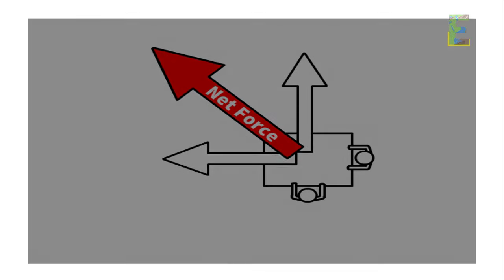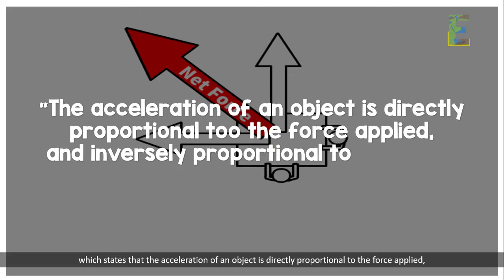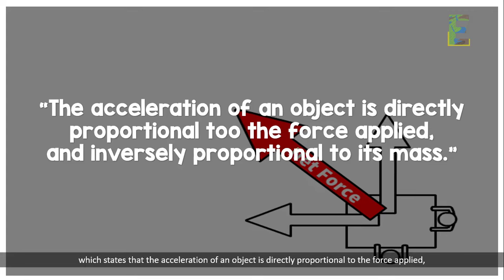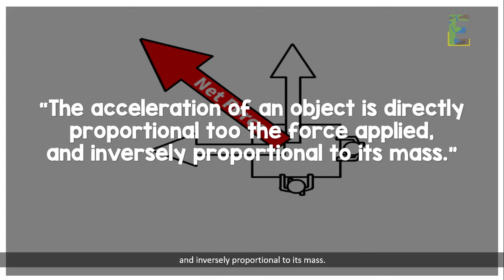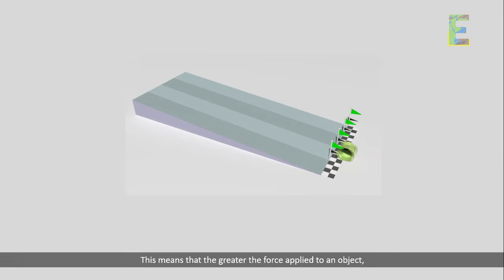This is described by Newton's second law of motion, which states that the acceleration of an object is directly proportional to the force applied and inversely proportional to its mass. This means that the greater the force applied to an object, the greater its acceleration, and the more mass an object has, the less it will accelerate for a given force.